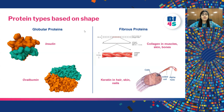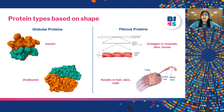Examples of globular proteins are insulin and ovalbumin. Insulin helps in maintaining blood sugar and ovalbumin is a protein found in egg. As you can see, both have compact structures with irregular surfaces. These are space-filling models of the proteins.